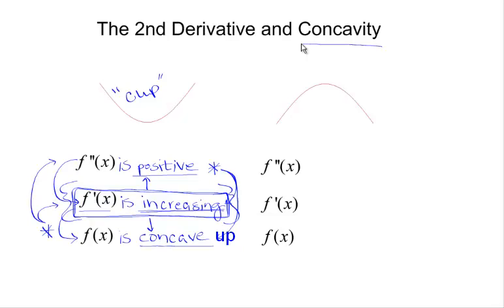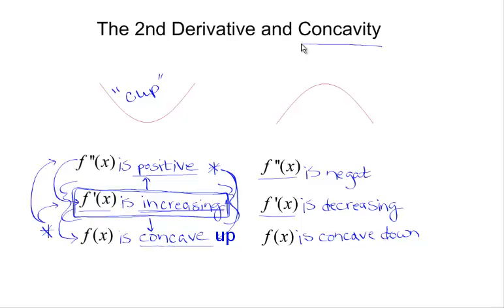If we determine that our function is concave down, then we know that f prime is decreasing. The monotonicity theorem tells us that any time a function is decreasing, that function's first derivative is negative. So just as we get positive second derivative, increasing first derivative, and concave up function together, we get the same grouping with negative second derivative, decreasing first derivative, and concave down function. A function that is concave down is shaped like a mound — concave up like a cup, concave down like a mound.